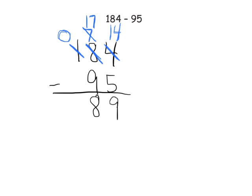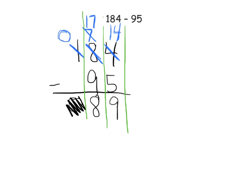In the hundreds column we have zero hundreds take away zero hundreds, so we're done. A lot of students want to put a zero there — they don't need to, and we'd prefer they don't. We don't need those leading zeros. So the answer is 89. I also want to point out that I'm working hard at keeping our columns, honoring that place value chart from the previous lessons. If students need help, tell them to turn their lined paper sideways to create columns, or give them graph paper.